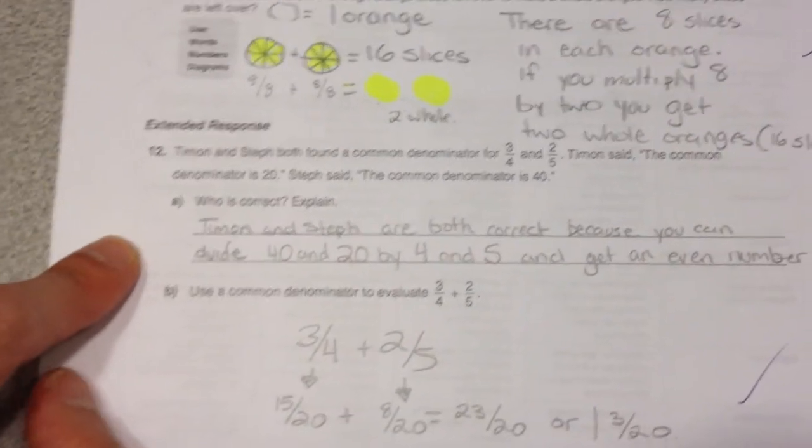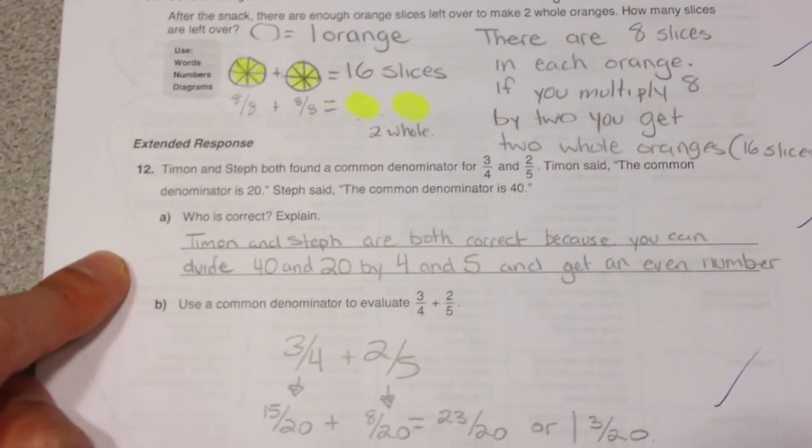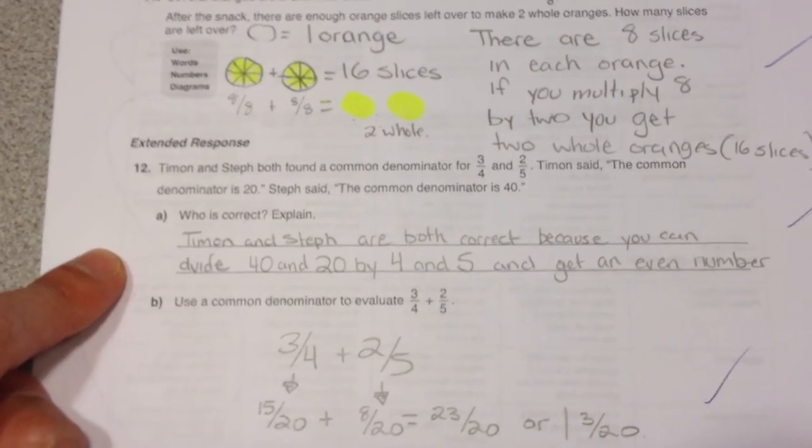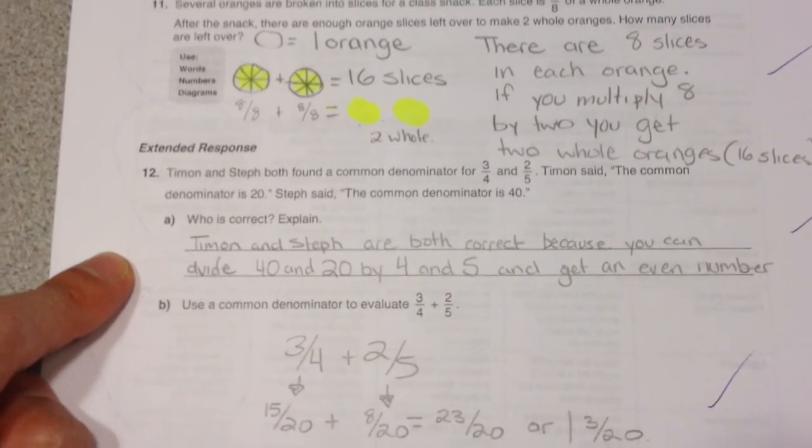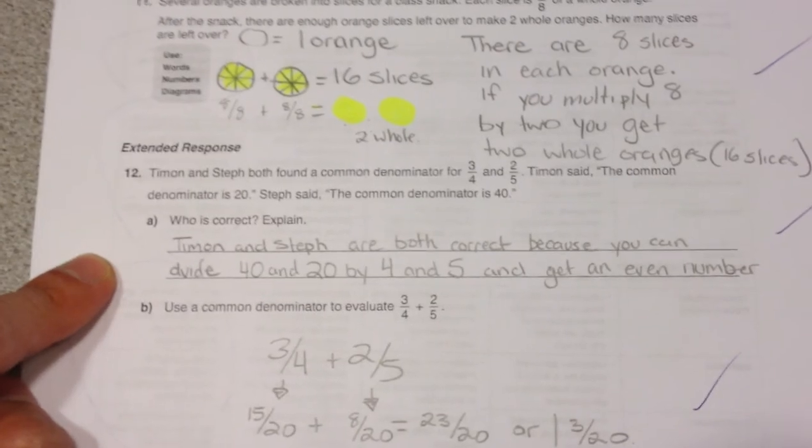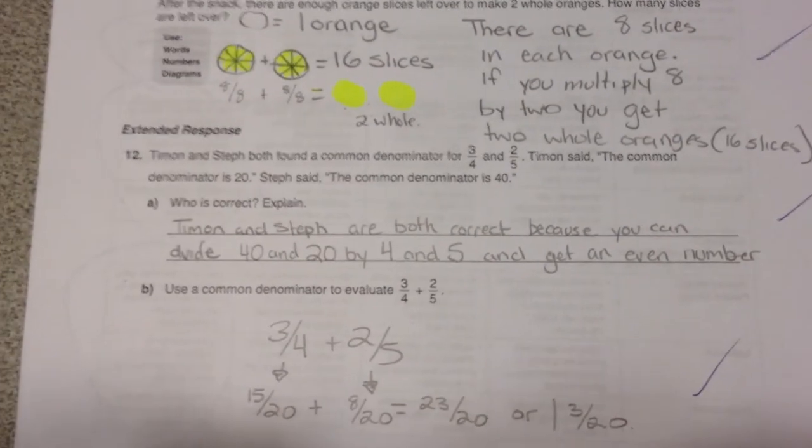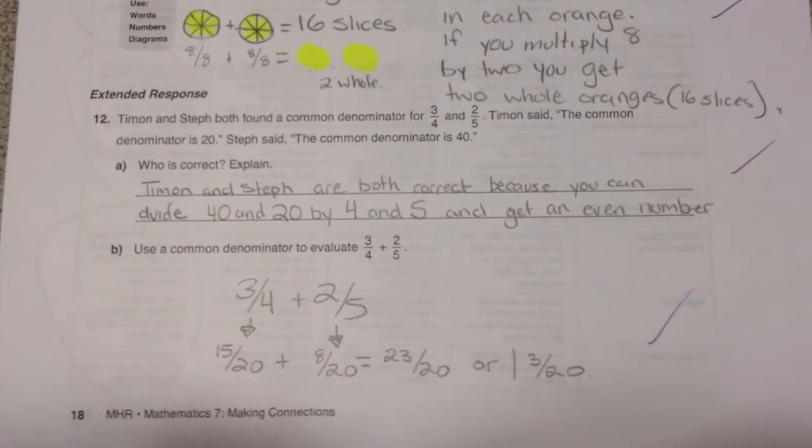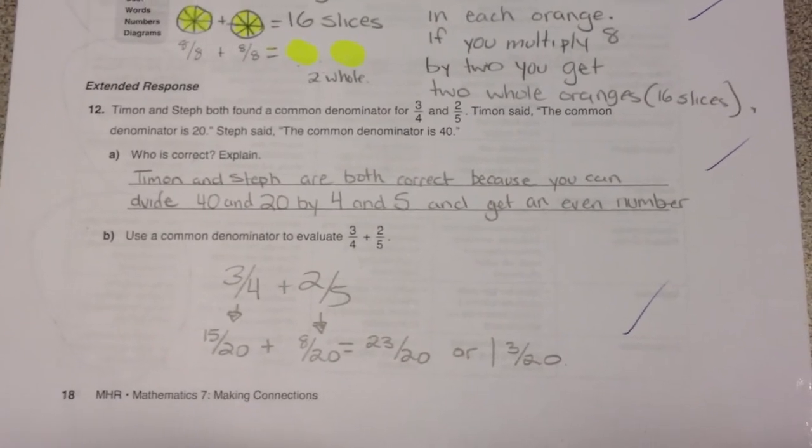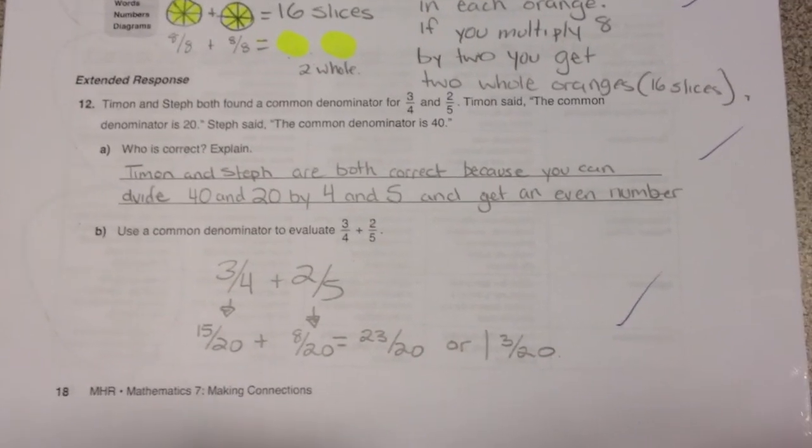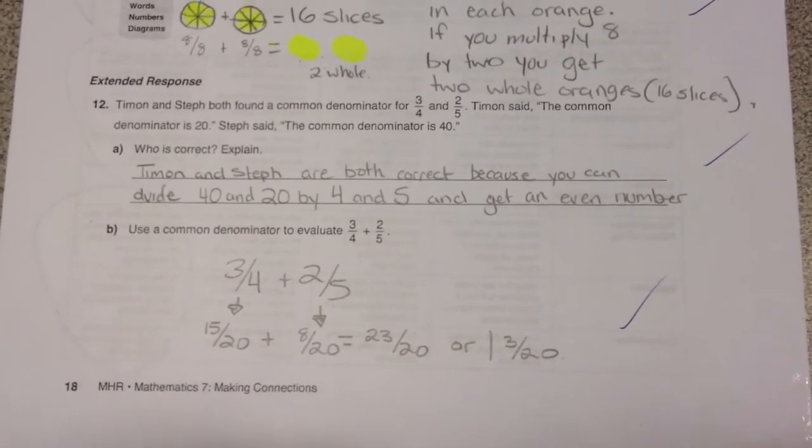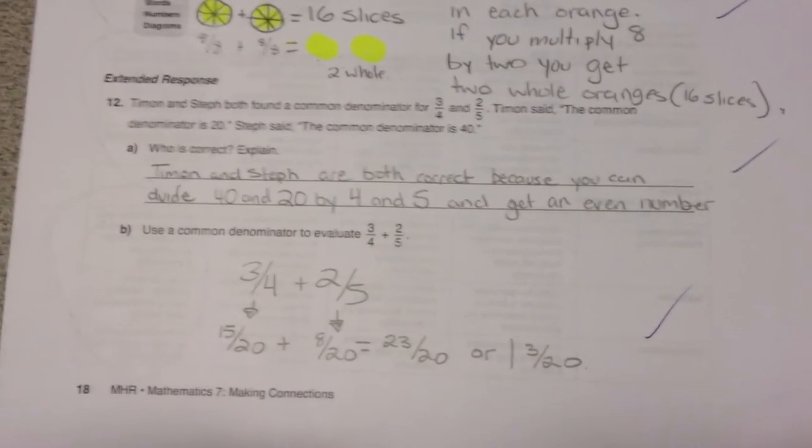And finally, in question 12, both are correct. 3/4 and 2/5 can either have a common denominator of 20 or 40. And the explanation should include something about the fact that 20 and 40 both work as common denominators for 4 and 5.